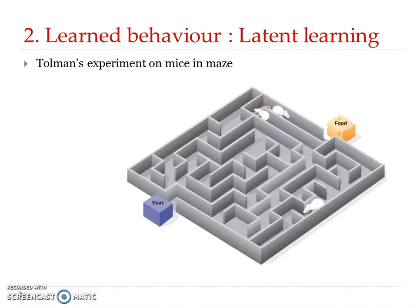A good experiment on latent learning was conducted on mice placed in a maze. A non-hungry rat was allowed to explore a maze for 10 days. During this time the animal learned several things, but they remained latent — the rat moved around through the maze and became acquainted with its different parts. On the 11th day it was made hungry, and the animal could find the food placed at a particular end of the maze quickly.